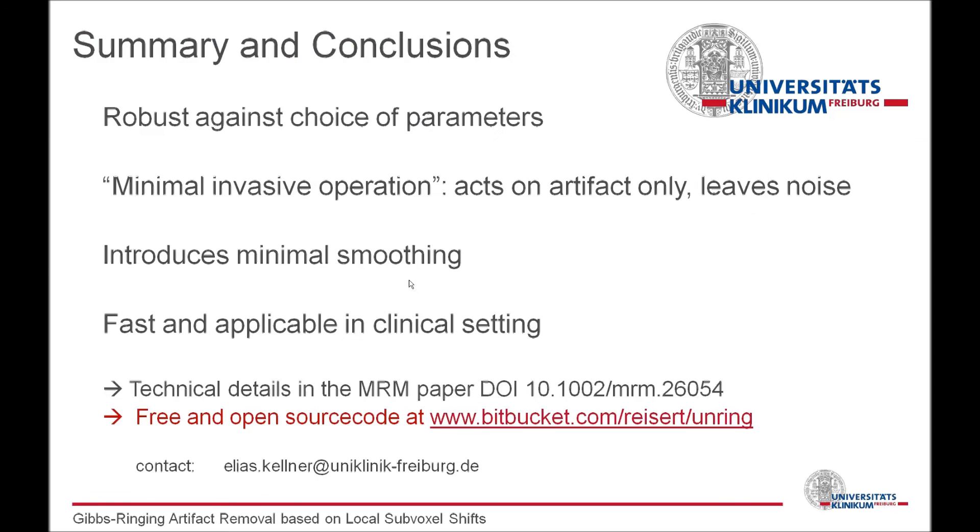So to summarize, with the proposed method, Gibbs ringing can be removed in a very robust fashion. That means you cannot overdrive the method by a wrong choice of parameters. You could even apply it several times after the first run; the image will almost remain the same. It can be understood as a surgical, minimal invasive operation. The method acts only at the ringing and tries to keep the noise untouched. And it's reasonably fast and therefore can be directly applied in a clinical setting. The source code of our implementation is free and open source and can directly be downloaded at this link. If you want to implement it into your toolboxes, just go ahead. If you have any questions or remarks, of course, do not hesitate to contact us. So, thanks for watching and happy un-ringing.